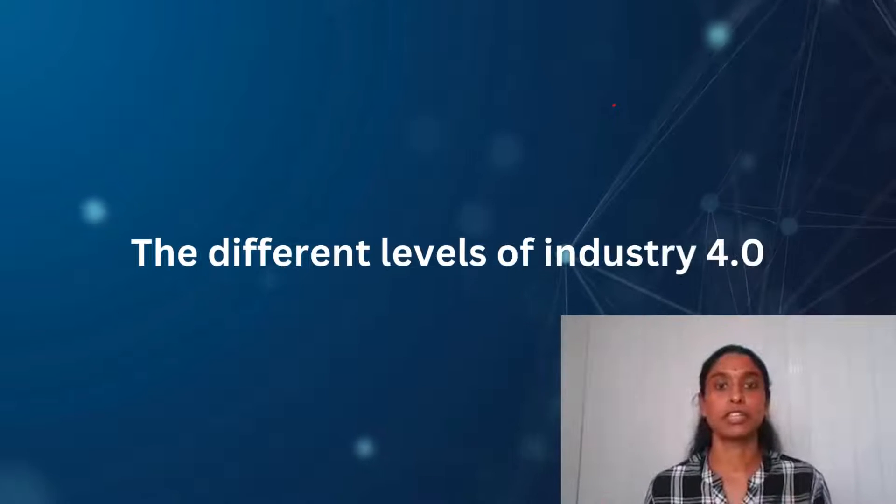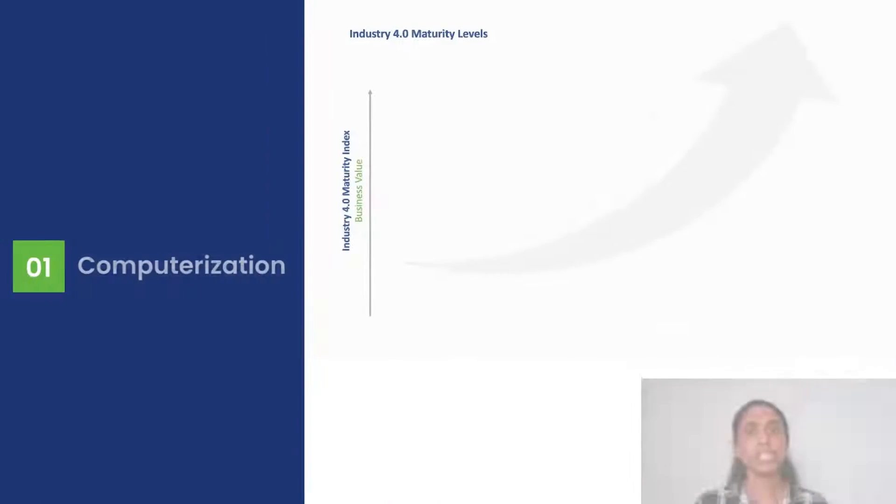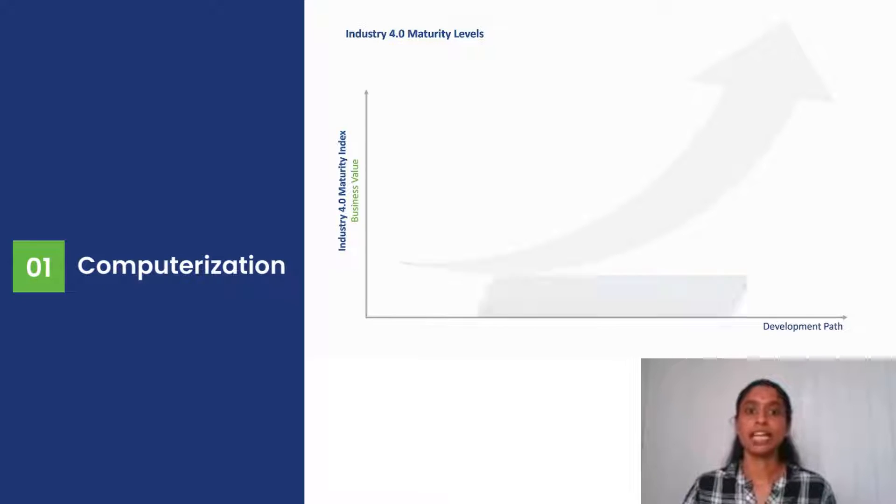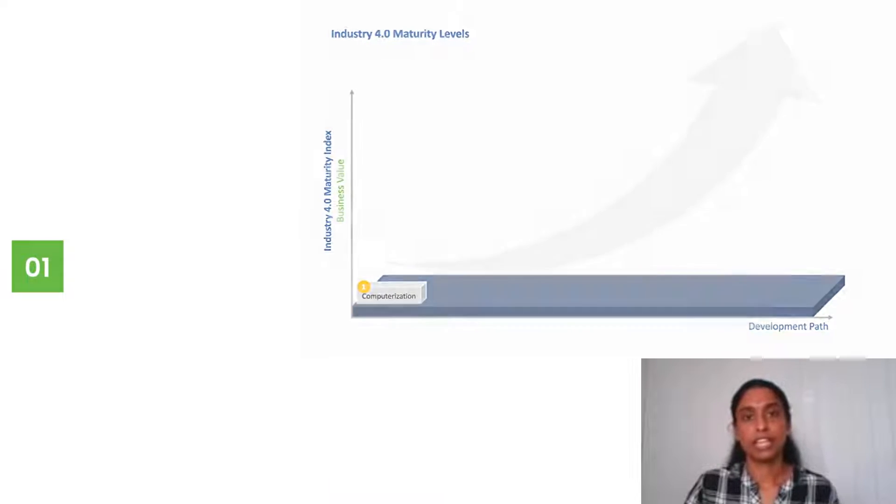Different levels of Industry 4.0. We will see about the different levels. The first level they term as Computerization. Computerization tells about how the organization is operating. In this level, the organization operates completely manually. They do not depend upon any systems like Excel or some other ERP system for data entry.